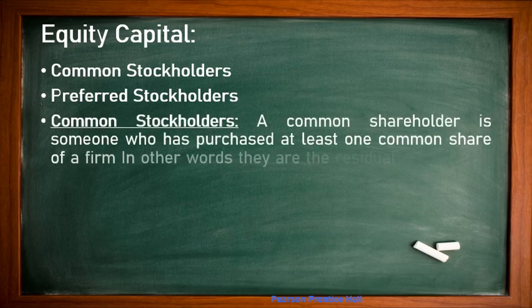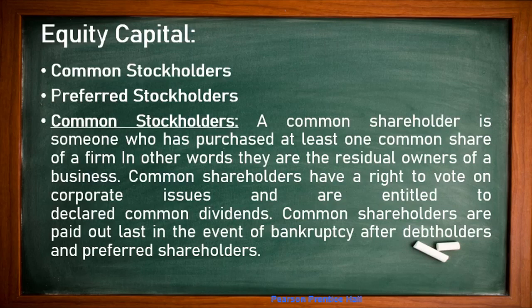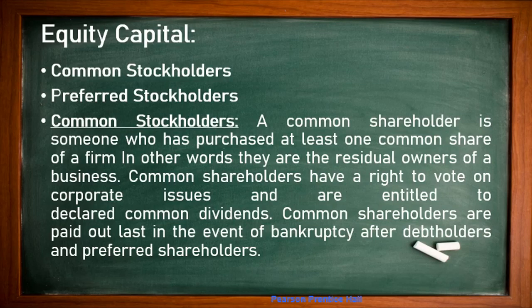A common stockholder is someone who has purchased at least one common share of a firm — they are the residual owners of the business. Common shareholders have the right to vote on corporate issues and are entitled to declared common dividends. However, common stockholders are paid out last in the event of bankruptcy, after debt holders and preferred holders.